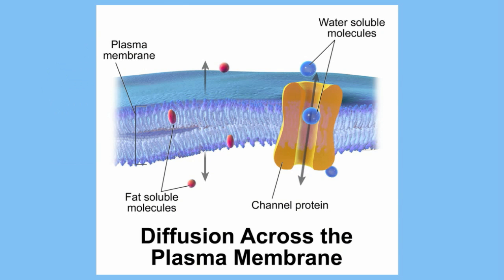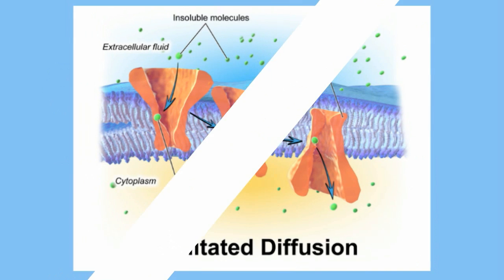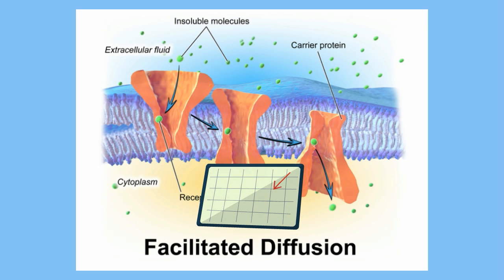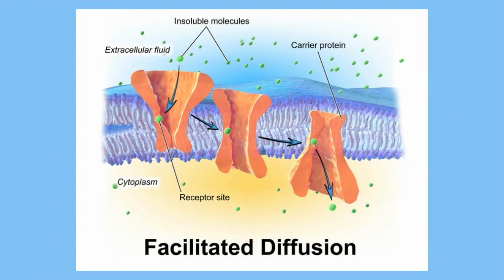The other type of facilitated diffusion is using a carrier protein. It is a protein that changes shape in order to move larger molecules into and out of the cell. It works in both directions, and again objects move from high concentration to low. One side of the protein carrier opens so that a particle can enter, then it opens on the opposite side of the membrane and goes either into the cell or out. Sugars and amino acids use carrier proteins.